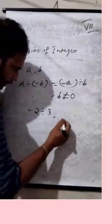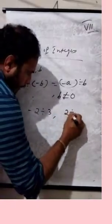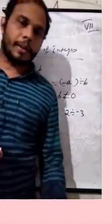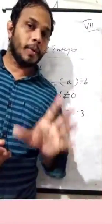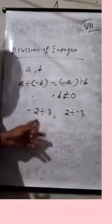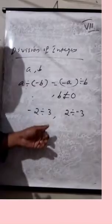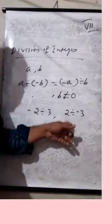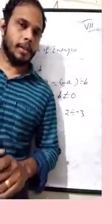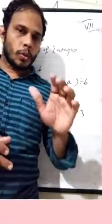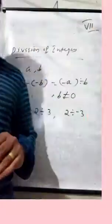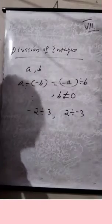For example, minus 2 divided by 3 and 2 divided by minus 3 are both equal. You can find that both are equal.